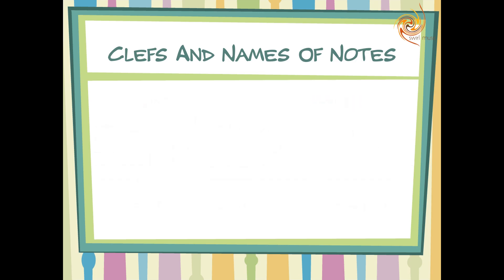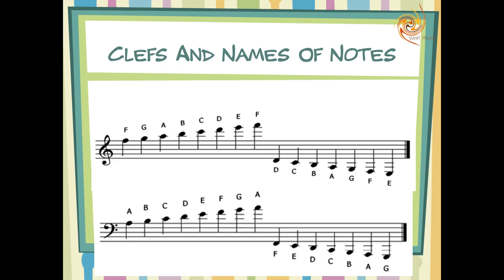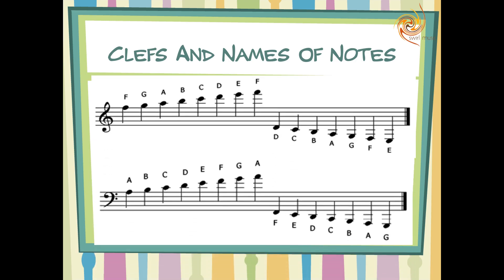There are a few notes or pitches that may be too high or too low to fit on a staff line. In such cases, the notes may go above or below the staff line with imaginary lines. These added lines drawn are called ledger lines.